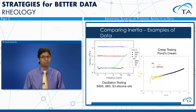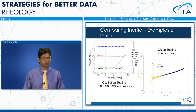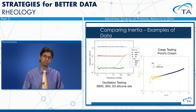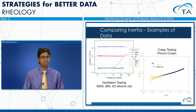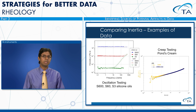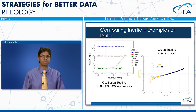Inertial effects can also appear in creep experiments with low stiffness samples. Shown here are creep tests on both the ARES G2 and the DHR on PONS cream. With the DHR system, we see inertial creep ringing; these effects are not present with the ARES G2. Note that some rheological information can be obtained by fitting certain models to the creep ringing data, which might be useful depending on what you're doing.